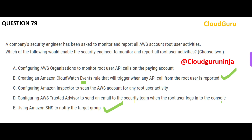If you look at the sequence: the rule will first trigger and then it will send messages or push notifications. Whenever you see questions about monitoring root user activities, close your eyes and straight away look for CloudWatch Events rule and SNS. Simple — don't think much. Now I will explain why the other options are not correct.